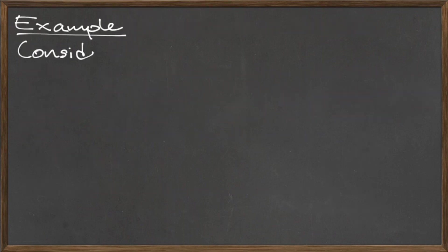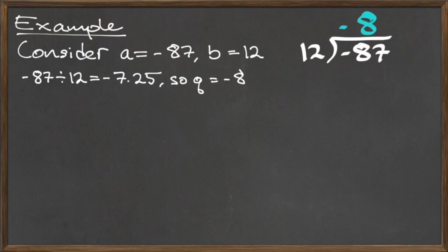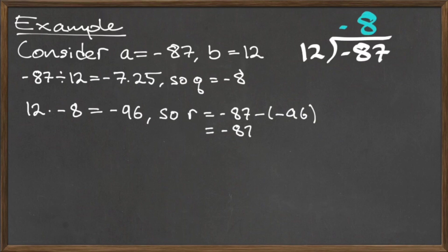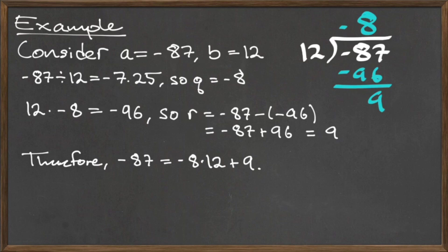To illustrate this with an example, let's compute the long division of negative 87 by 12. Our first step is to set up our long division bar with negative 87 on the inside and 12 to the outside left. Next, we use our calculator to compute negative 87 divided by 12, which is negative 7.25. To find the quotient, we take the integer part of this answer, which is negative 7, and subtract 1, so the quotient is negative 8. We place the quotient negative 8 on top of the division bar, and then compute 12 times negative 8, which is negative 96, which we place below negative 87 under the division bar. Finally, to find the remainder, we subtract negative 96 from negative 87 to get the remainder of positive 9. So the division of negative 87 by 12 can be expressed as: negative 87 is equal to negative 8 times 12 plus 9.